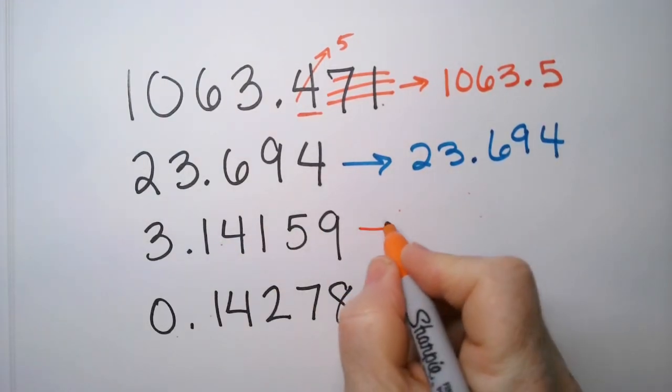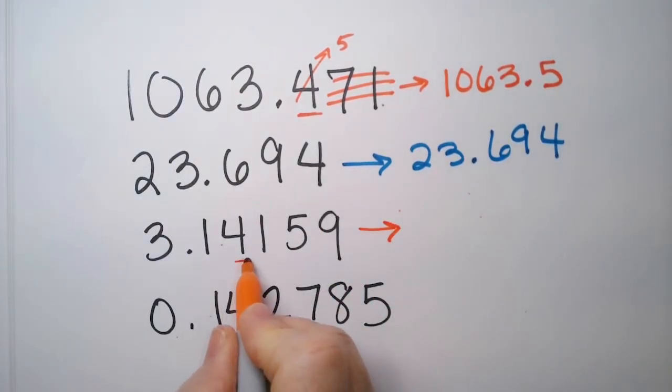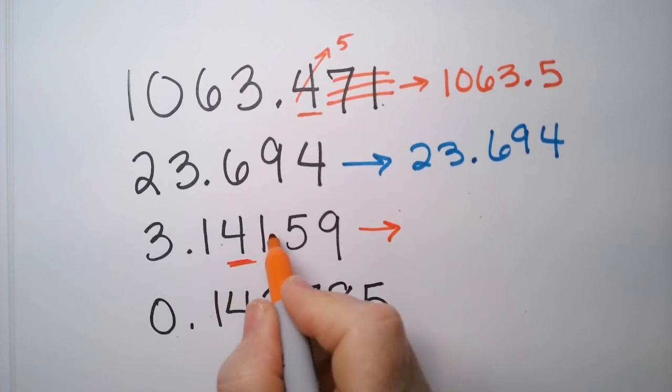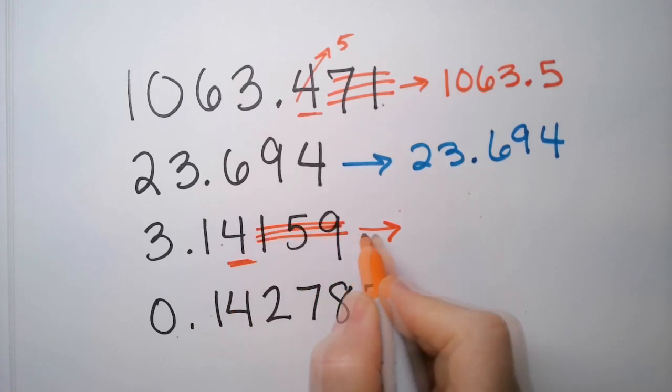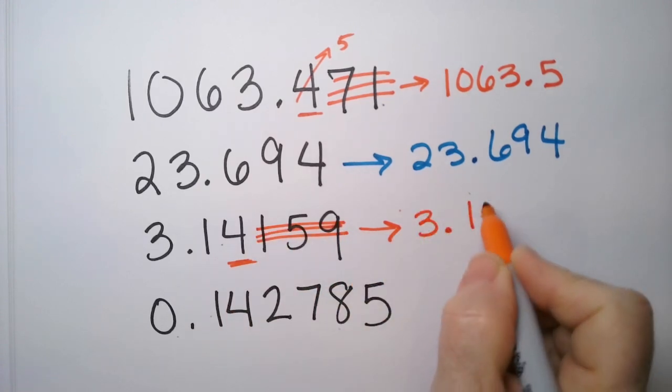This one, let's round this one to the nearest hundredth. This is the hundredths place, and there's a 1. So that tells me this stays as a 4, and we get rid of the rest. So it's 3.14.